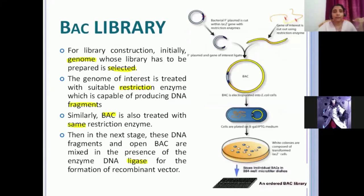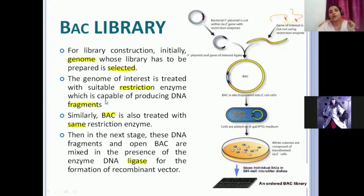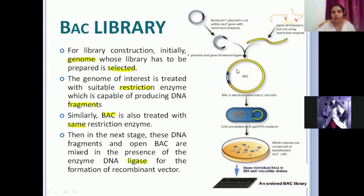For BAC library construction, first the genome whose library has to be prepared is selected — human, mouse, plant, or whichever organism you want. That genome of interest is treated with a suitable restriction enzyme to produce DNA fragments. Similarly, the BAC vector is also treated with the same restriction enzyme, so that both will have the same kind of sticky ends and can easily join when combined to give a cloned BAC.